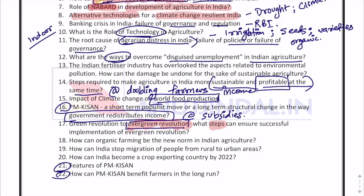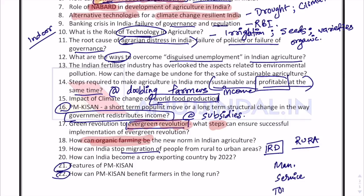How can organic farming be the new norm in Indian agriculture? This is a futuristic topic about what needs to be done to make organic farming not a luxury but a necessity — something mandatory. How can India stop the migration of people from rural to urban areas? This topic is specific to rural development — whether it is providing urban amenities in rural areas, providing more income to farmers, creating manufacturing and service industries in the rural sector, or promoting tourism — all these dimensions are important for stopping rural-to-urban migration.